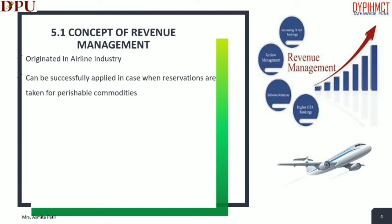In case of hotels, reservations are taken for a perishable commodity. The key to successful implementation appears to be an ability to monitor demand and to develop reliable programs. When hotels first started using revenue management, they focused strictly on guest room rates and the basic economic principles of supply and demand. The revenue management strategy would dictate keeping room rates low to convert every room inquiry into a reservation.